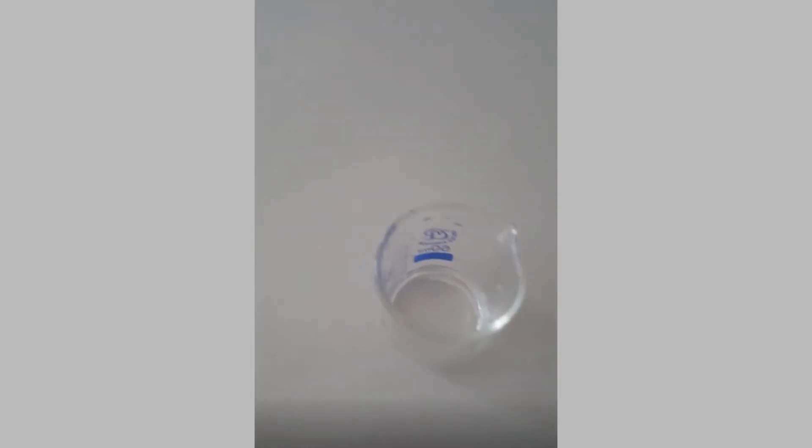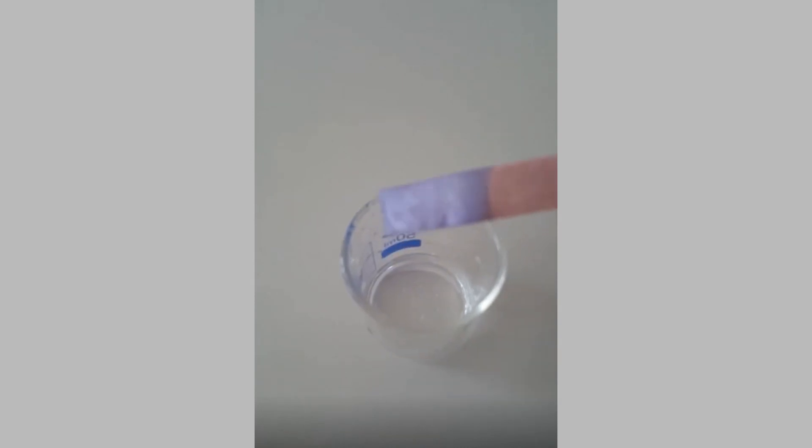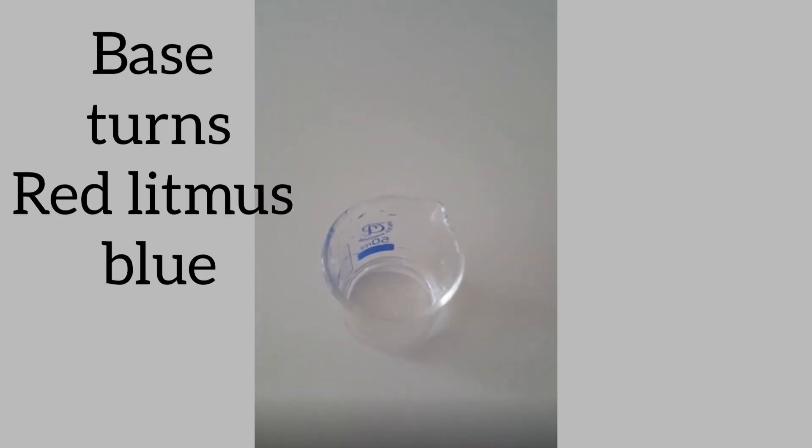Now, let us do the experiment with the second solution. I am putting the red litmus paper now. Wow. The color changes to blue. So, base solution changes red litmus paper to blue.